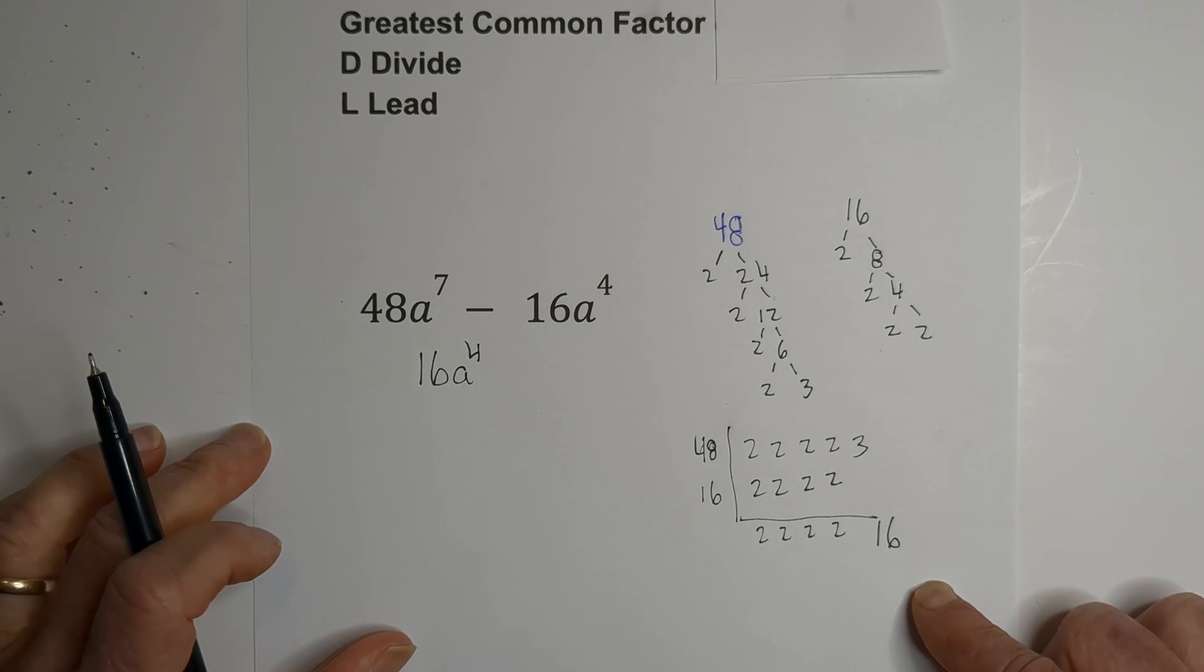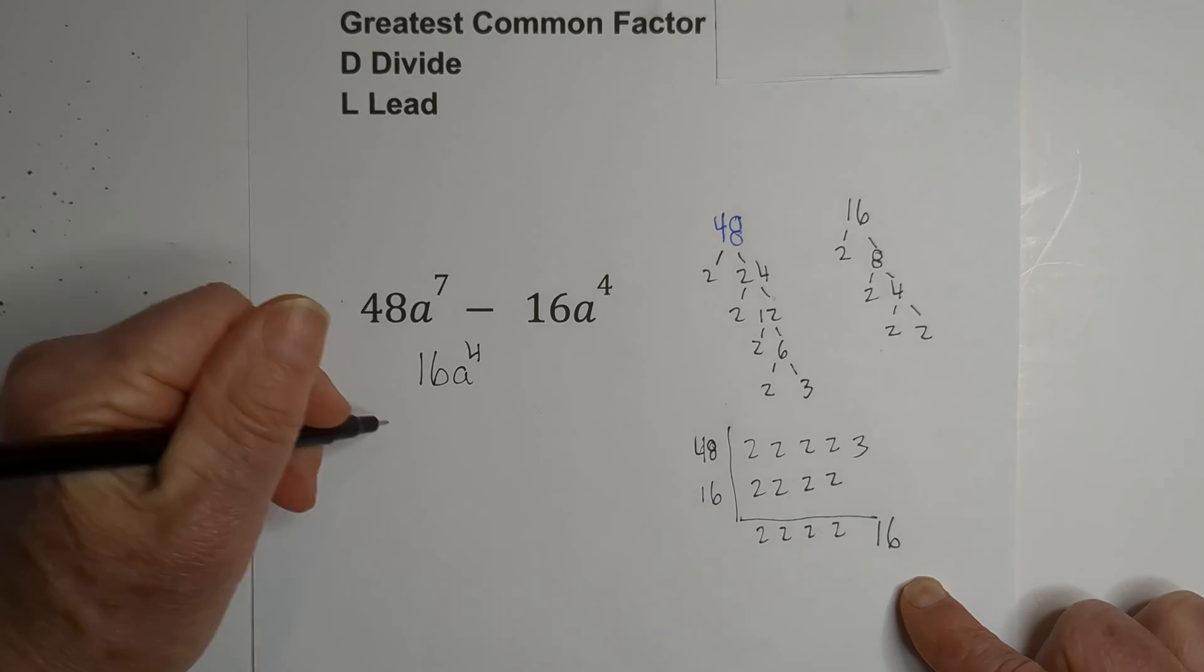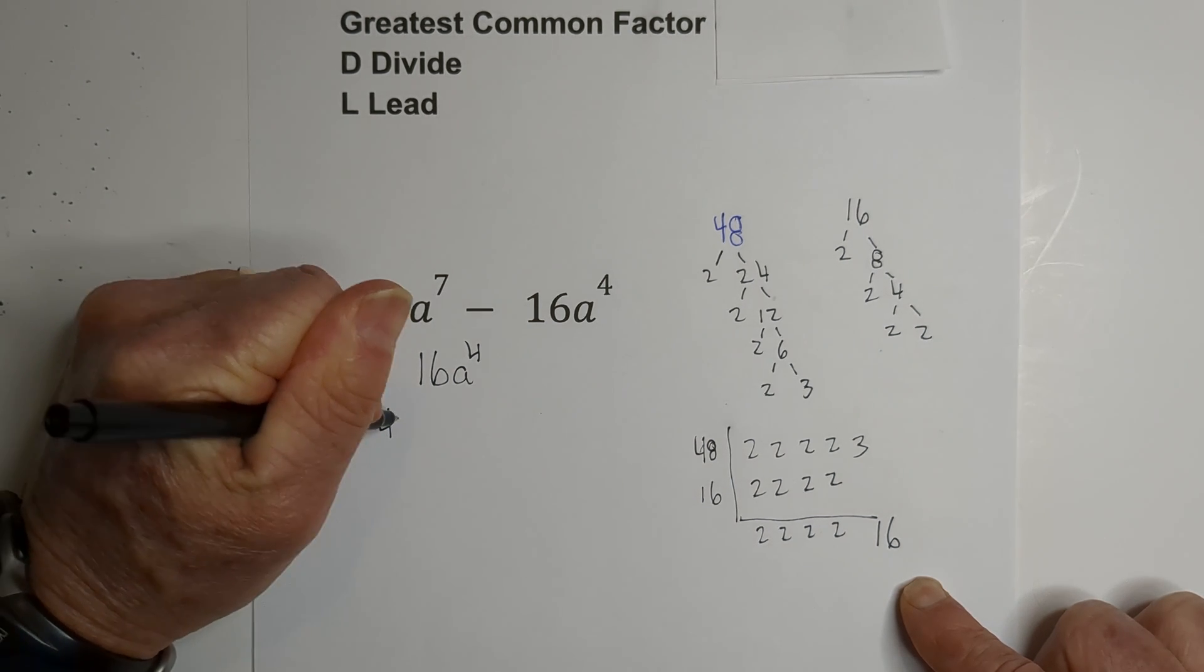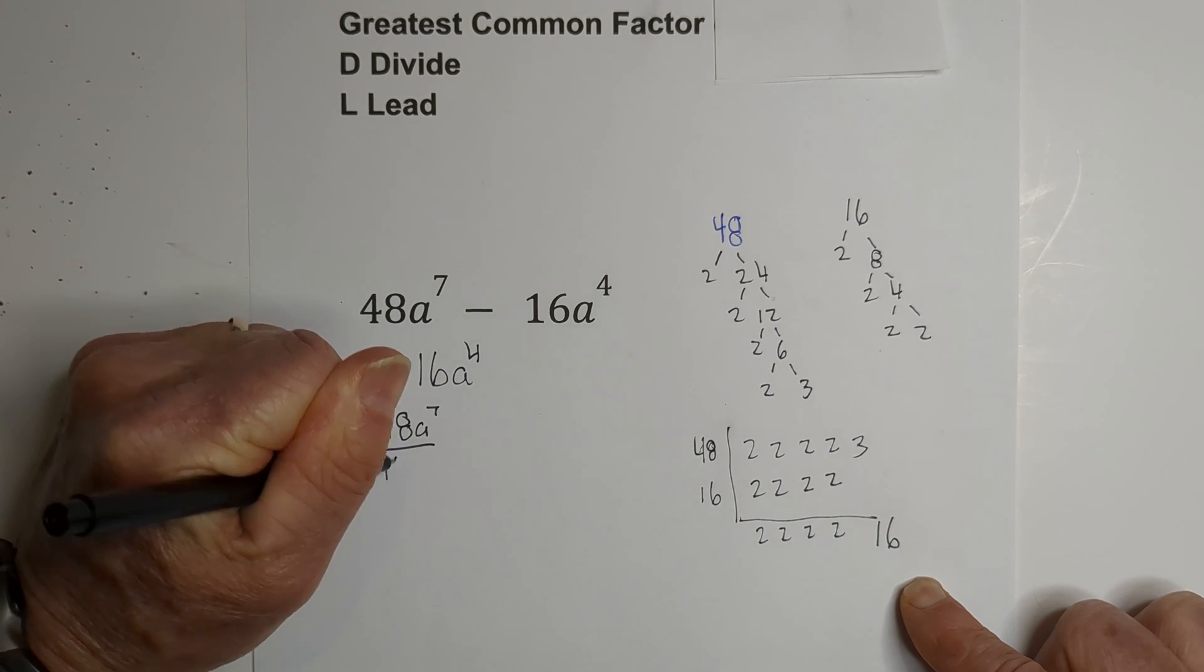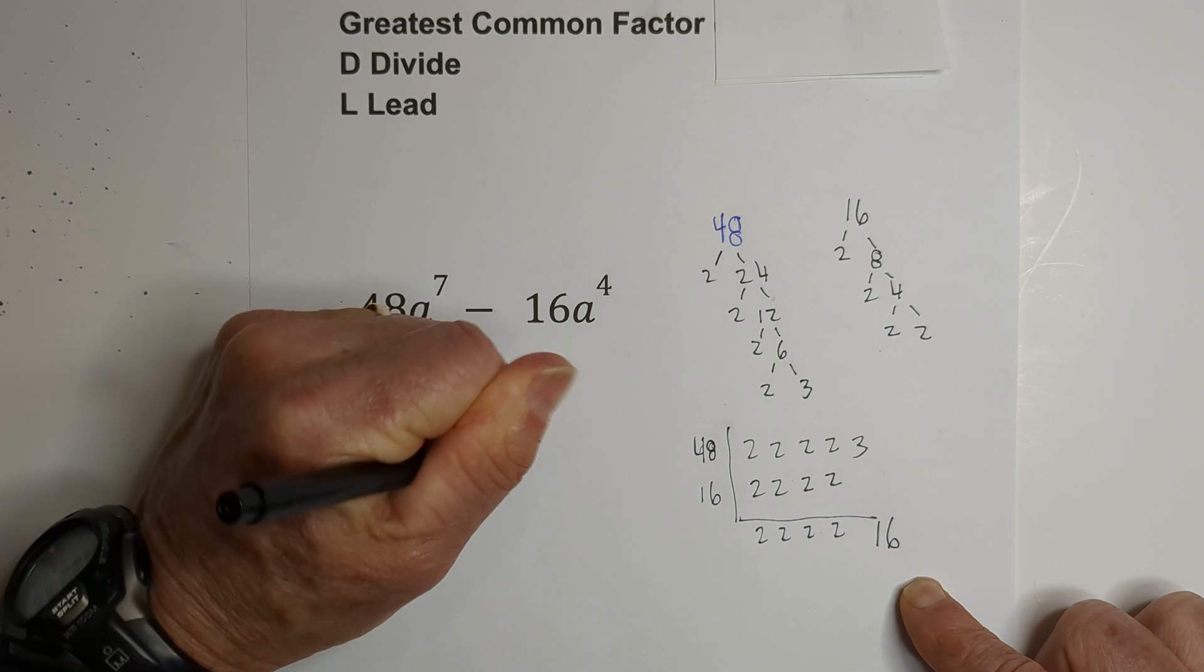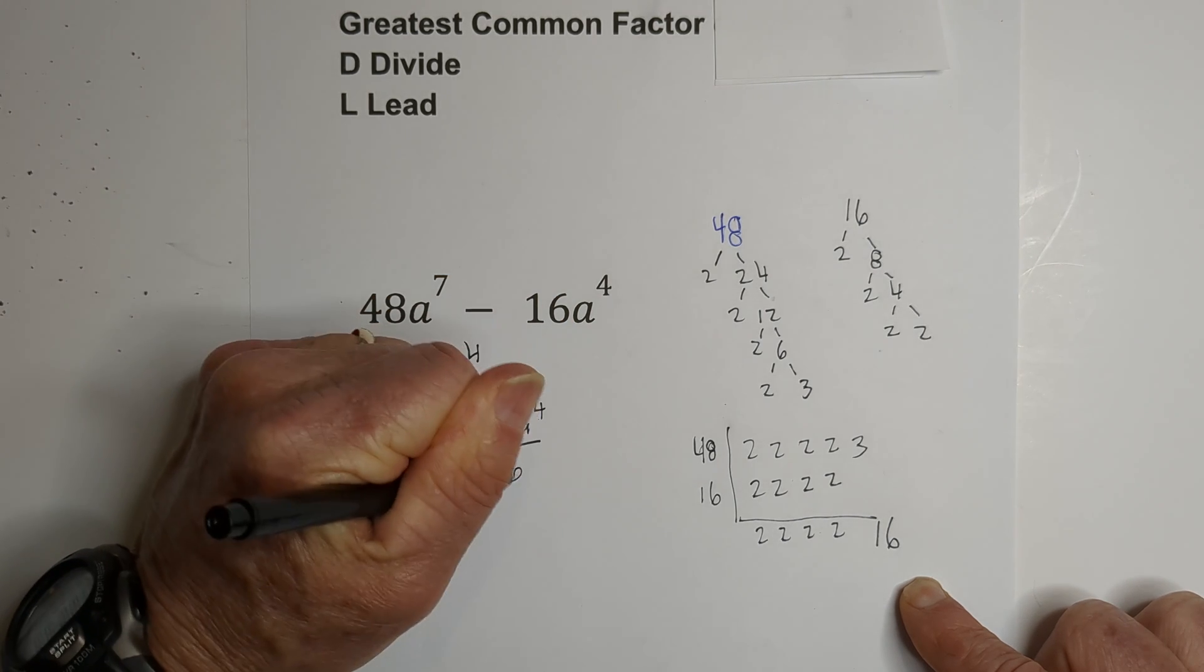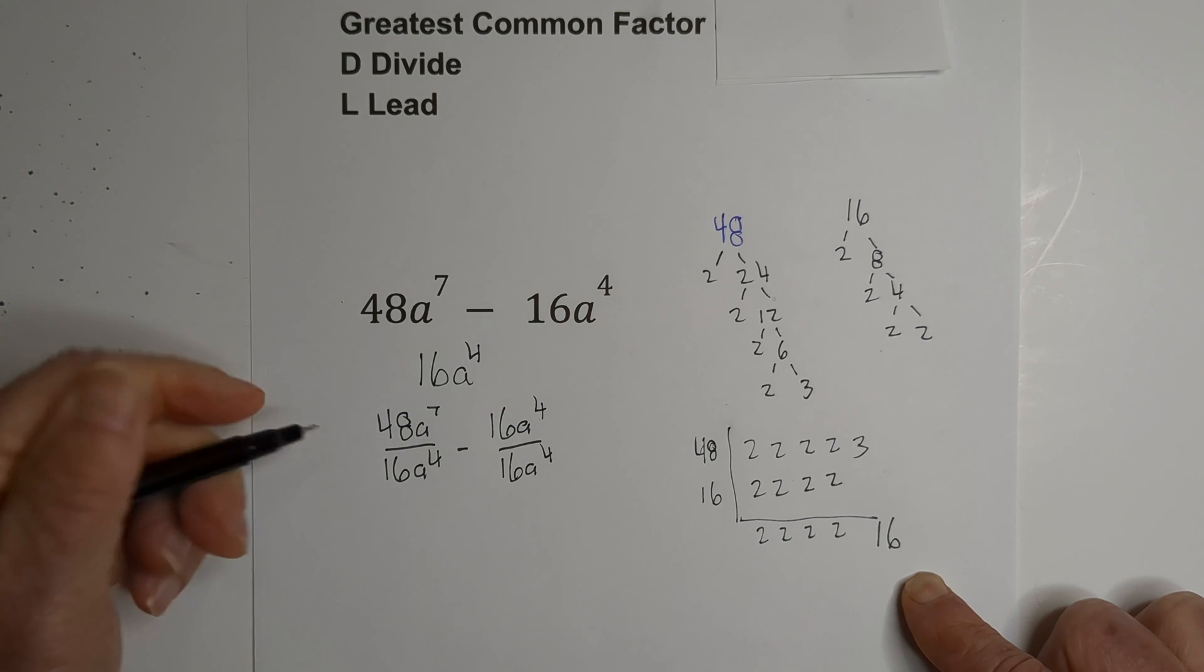Now we divide. We have 48a^7 divided by 16a^4, minus 16a^4 divided by 16a^4. Let's go ahead and do this.